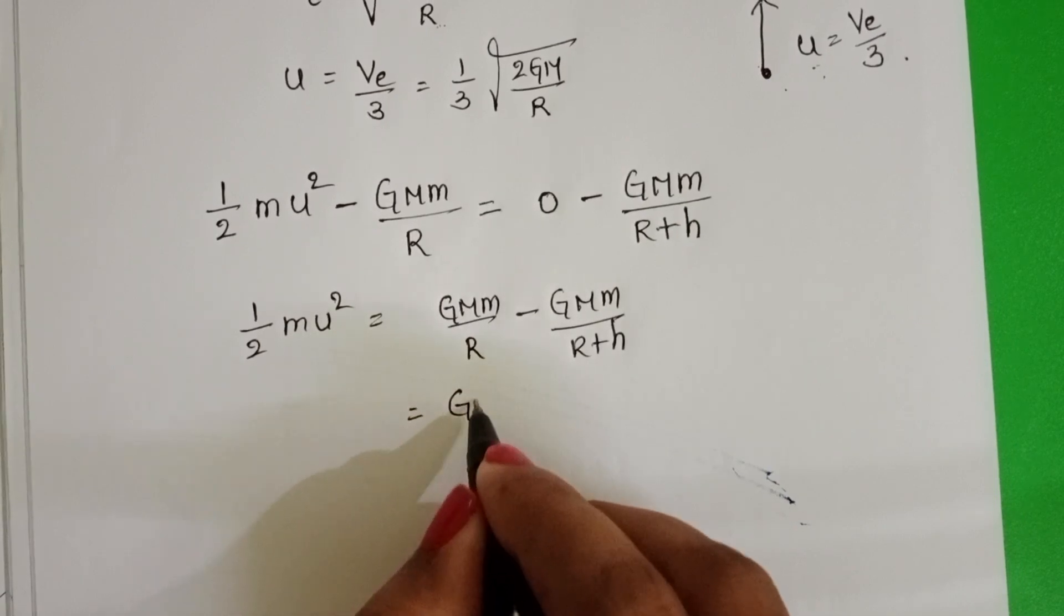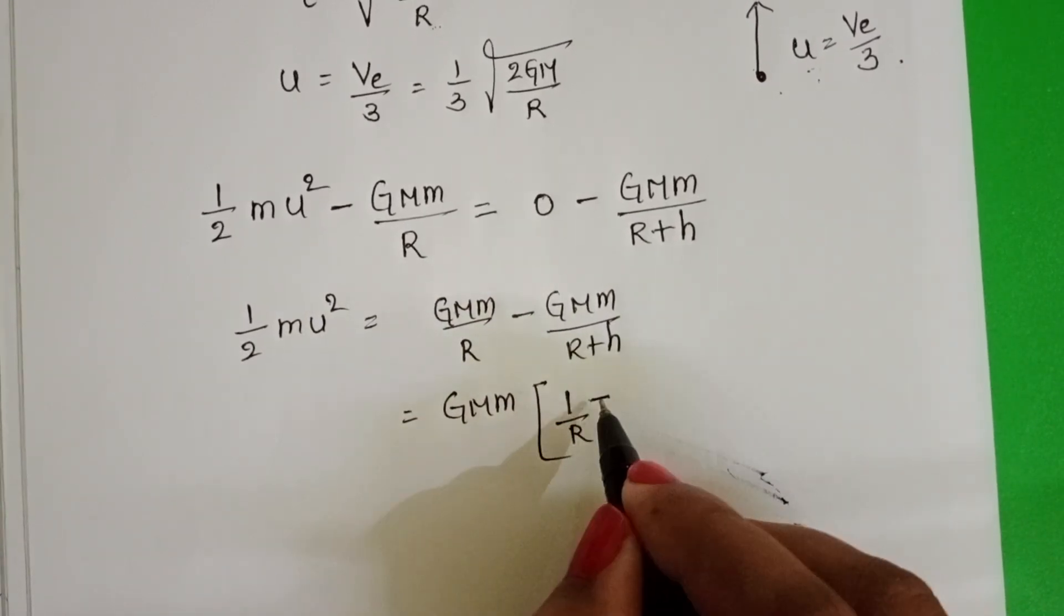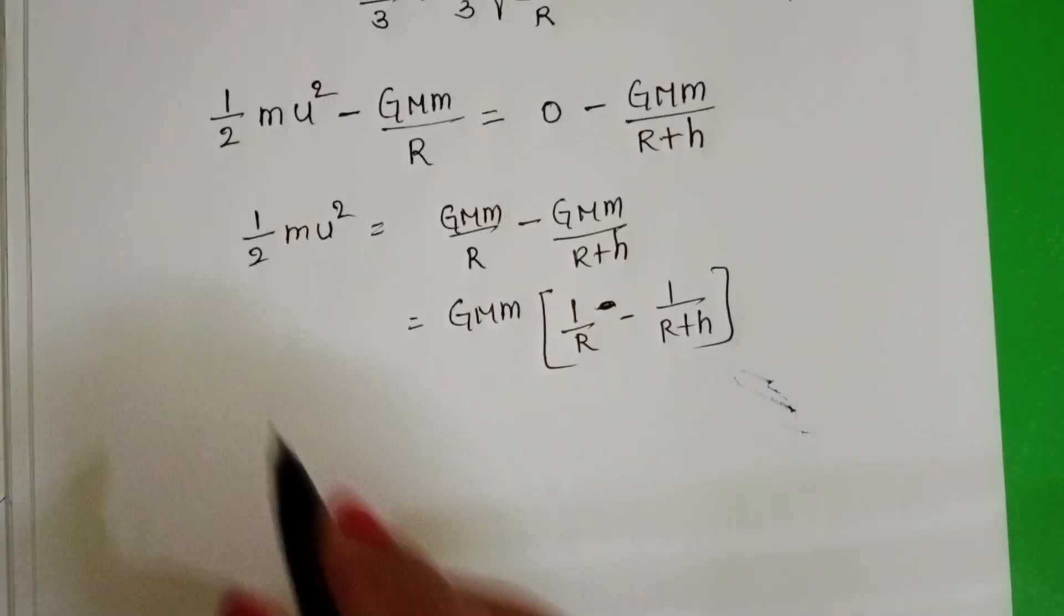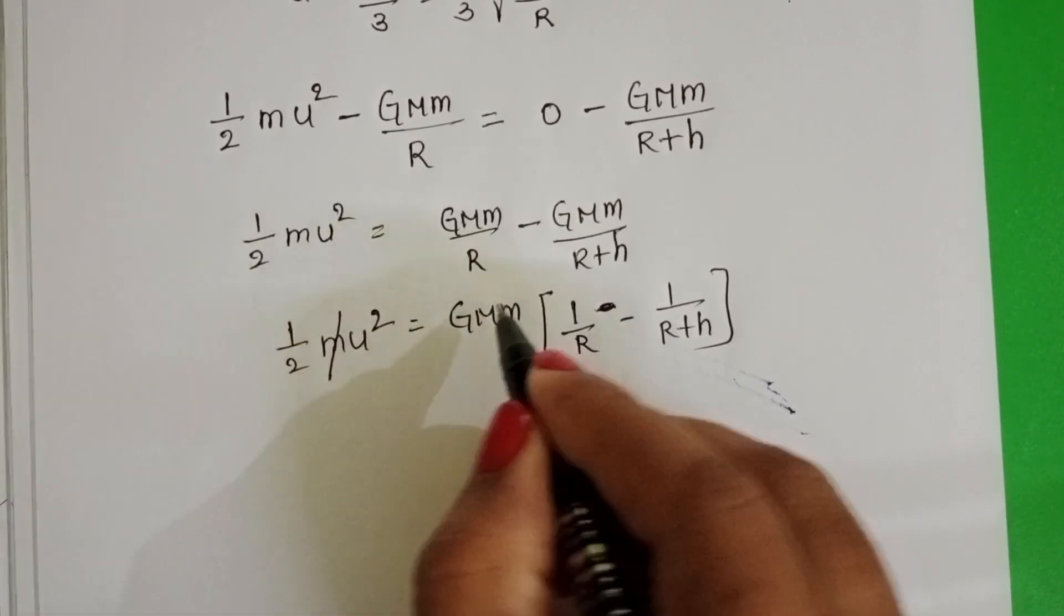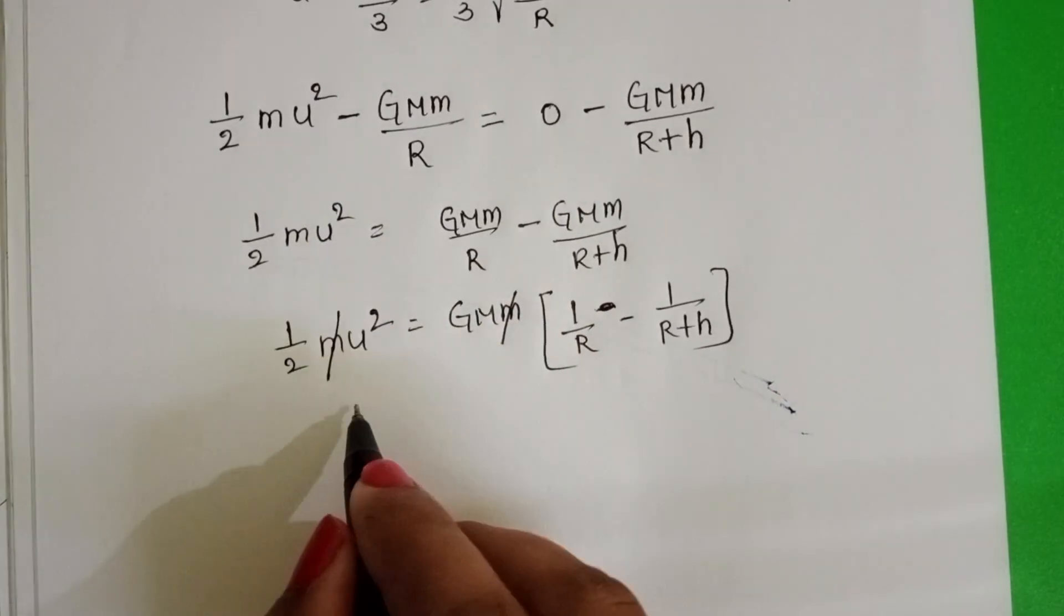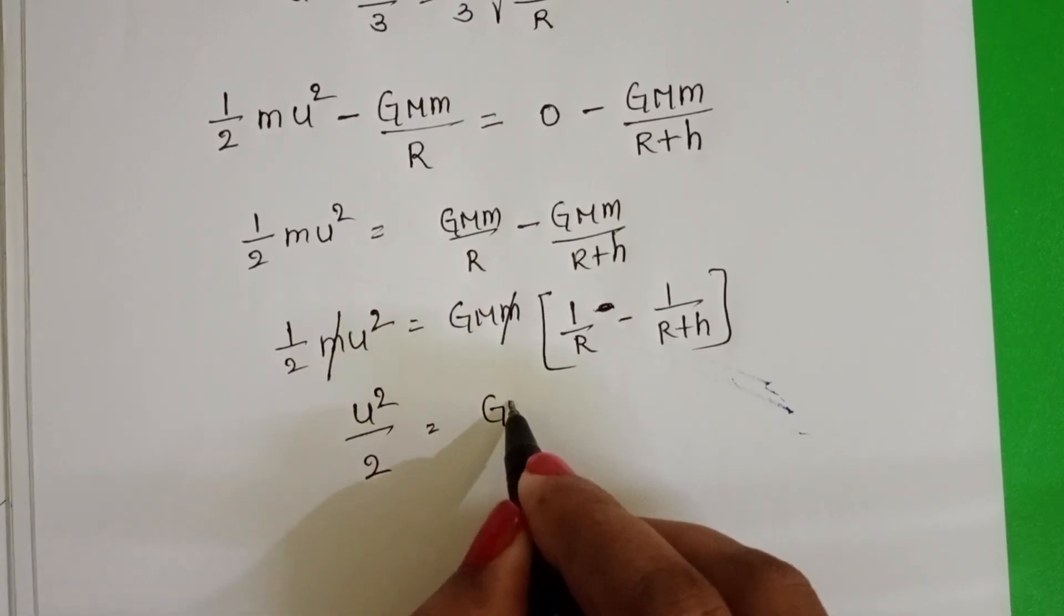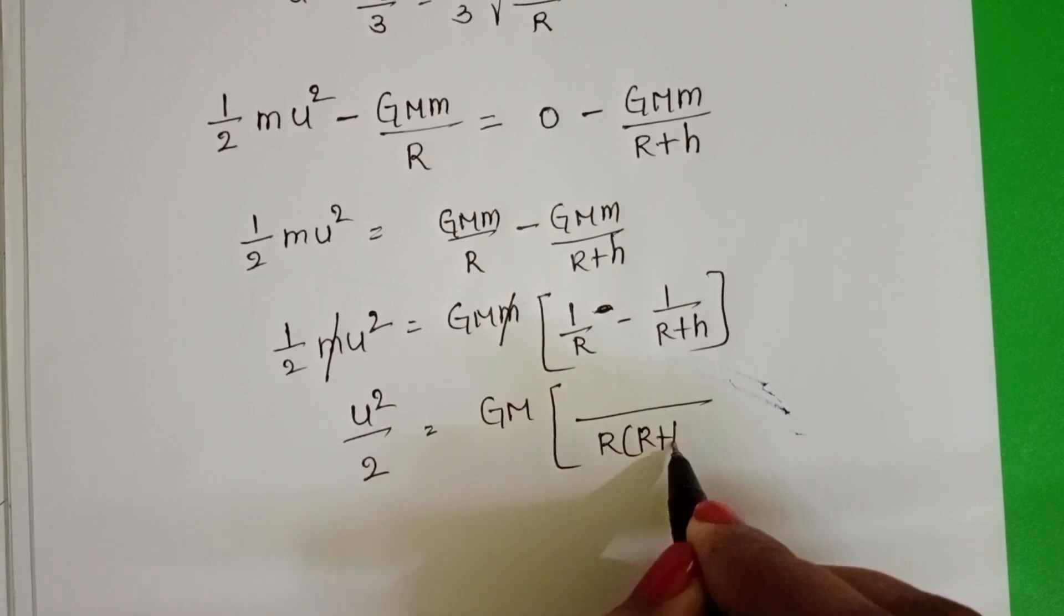Take GMm common: 1 by R minus 1 by R plus h. Here half m u square, m gets cancelled on both sides. U square by 2 equals GM into LCM is R into R plus h, R plus h minus R.